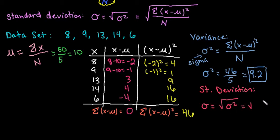So we would just take the square root of 9.2, and we get approximately 3.0332. So what this tells us is, on average, each of our data points vary from the mean by 3.0332 units.